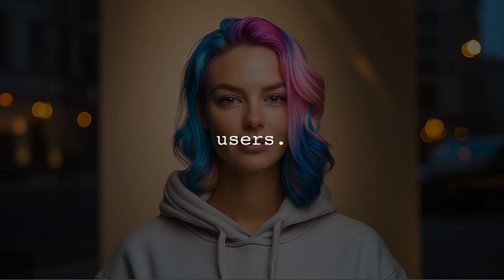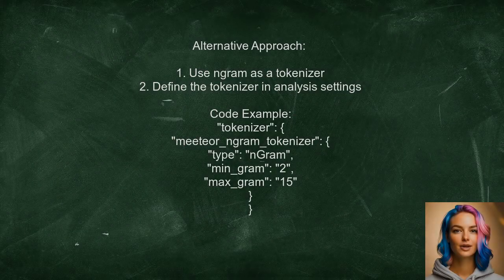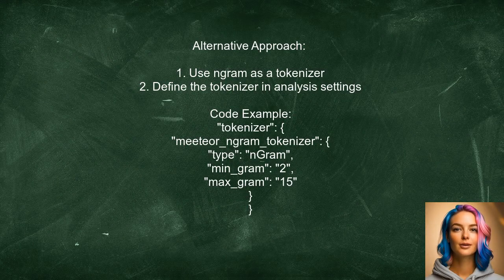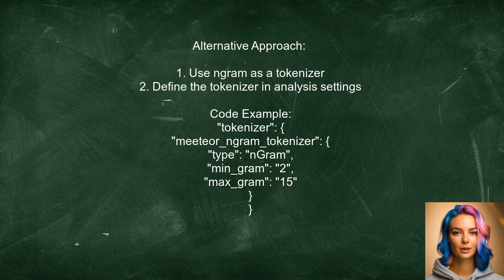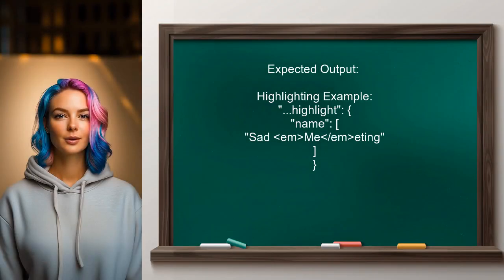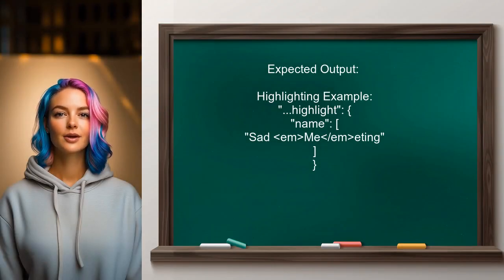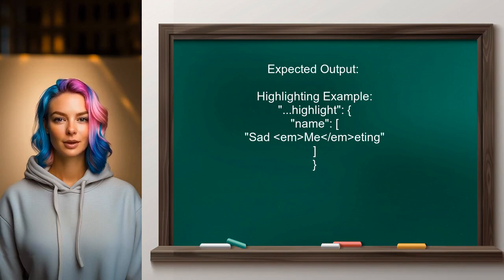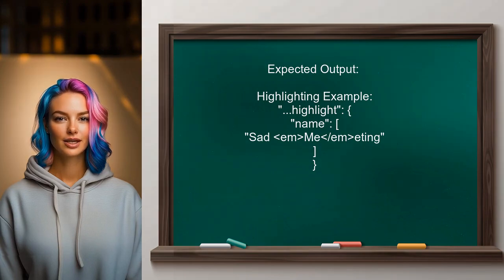Now, let's look at the answers provided by other users. An alternative approach to highlight NGram tokens is to use NGram as a tokenizer instead of a filter. This method involves defining a specific NGram tokenizer in your analysis settings. By implementing this tokenizer, you can achieve highlighting that focuses on the NGram matches — the output will highlight just the matching NGram within the word.